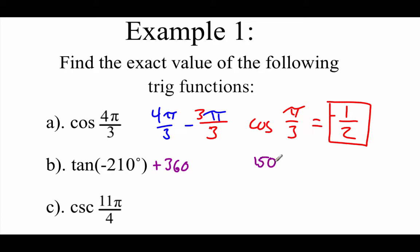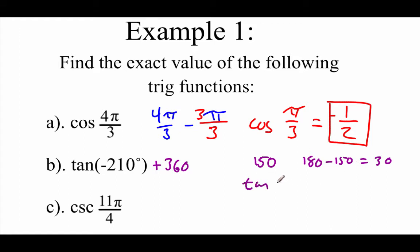Now 150 is a little bit smaller than 180, so in order to find the reference angle, I'm going to go 180 minus 150 to get a 30 degree reference angle, and 30 degrees is the same as π over 6. So we're looking at the tangent of 30, or π over 6, and the tangent there is √3 over 3.